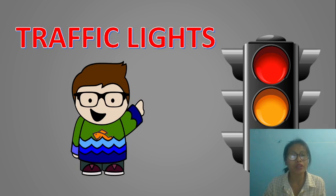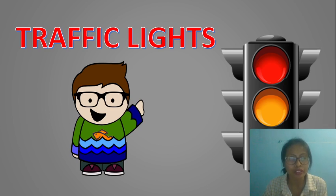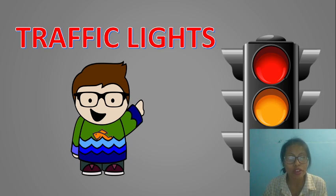Children, today we are going to learn about traffic lights. As you can see in the picture, there are three lights: red, yellow, and green. Each of these lights indicates some rules. You can see these traffic lights on a road.